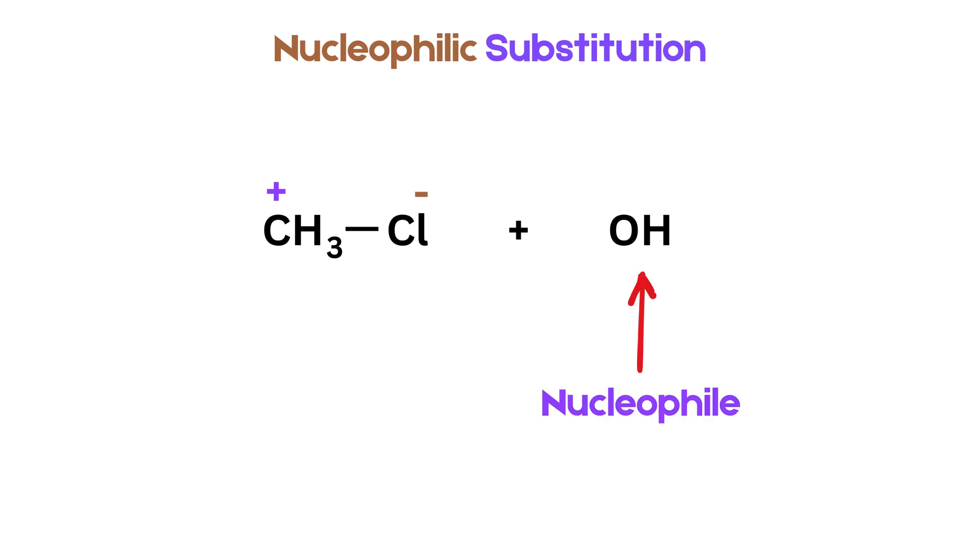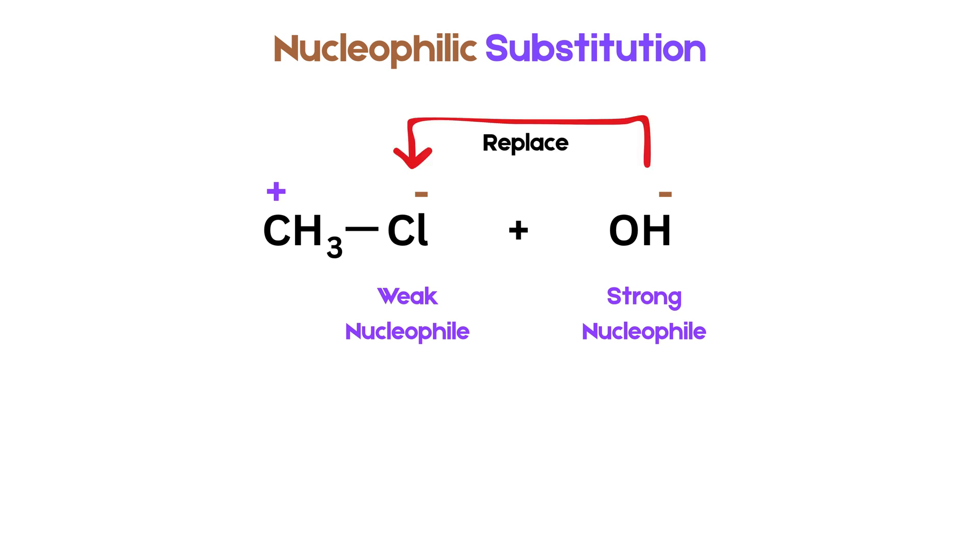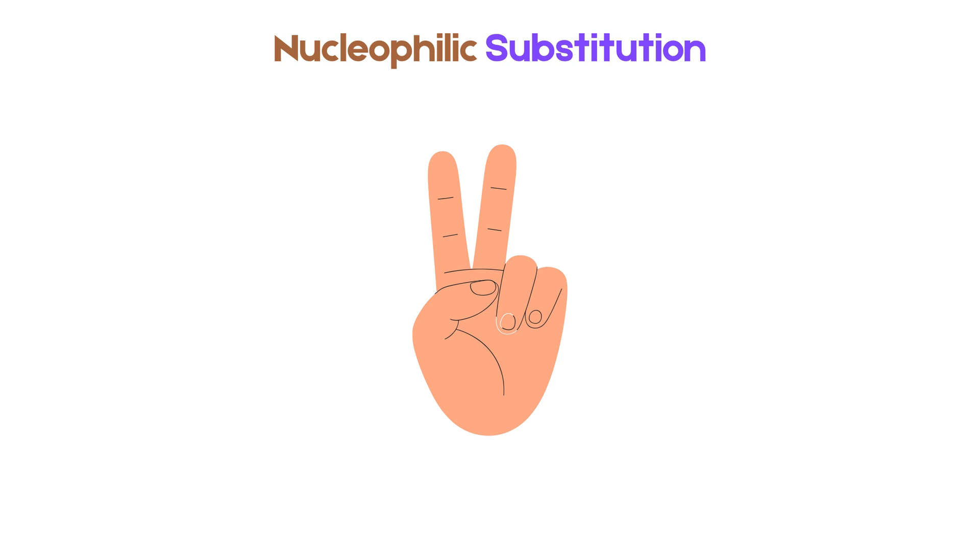OH- is a nucleophile because it has a negative charge and a lone pair of electrons on oxygen. Now, if we bring a nucleophile like OH- near this molecule, the strong OH- nucleophile will attack the positively charged carbon and push out the weaker nucleophile like the halogen. This is why we say the strong nucleophile replaces the weak one, and that is the core idea behind a nucleophilic substitution reaction.